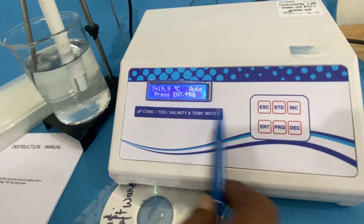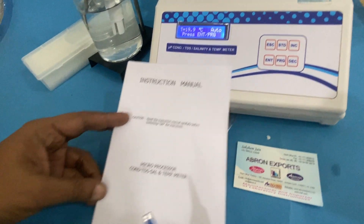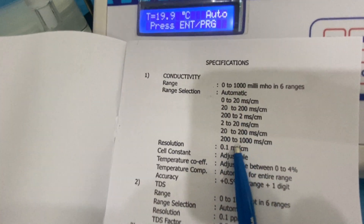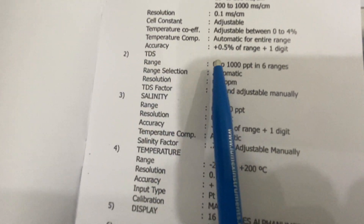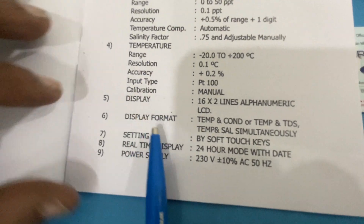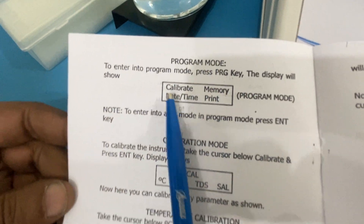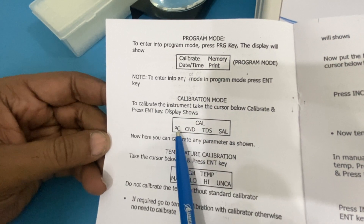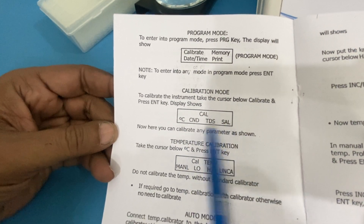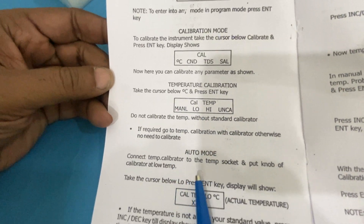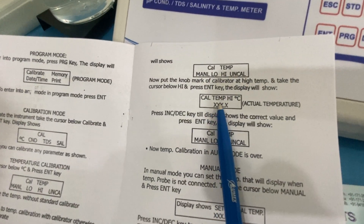Similarly, you can check all other parameters. The manual is very easy to follow — it tells you conductivity, all ranges, cell constant, TDS, salinity, temperature display, and similar items. It also tells you the program mode, how to enter it, the calibration mode, temperature and salinity calibration, automatic mode, and manual mode.